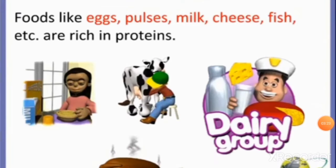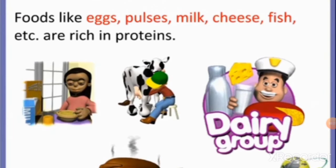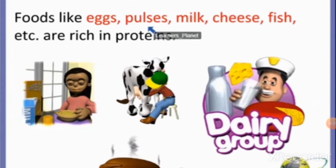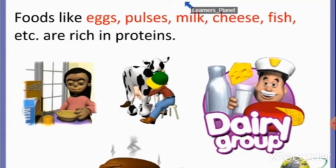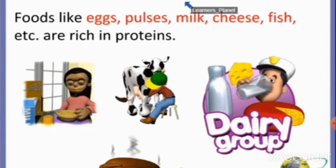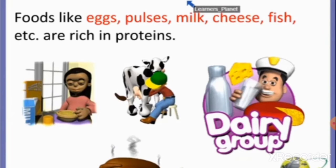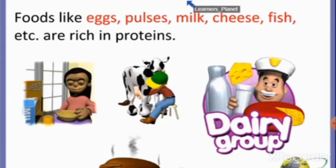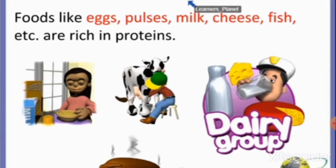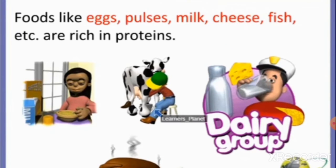Food items such as milk, egg, cheese, fish, meat, beans, and pulses are rich in protein. Food items rich in protein are called body-building food. They are needed for the growth and repair of our body and also for building muscles.